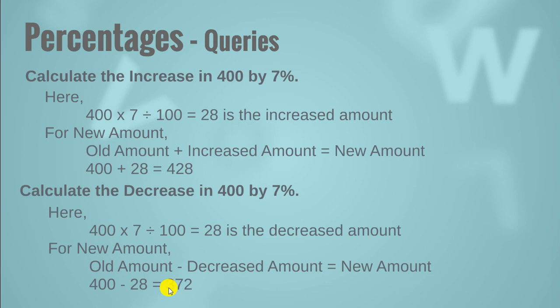Let's move forward. Here is another question. Calculate the increase in 400 by 7%. So we need to find 7% of 400, that is 400 multiplied by 7 divided by 100, that is 28. So 28 is the increased amount in 400. New amount will be 400 plus 28. 400 is the initial amount and 28 is the increased amount. So 400 plus 28 is equal to 428. 428 is the new amount after the increase of 7%.